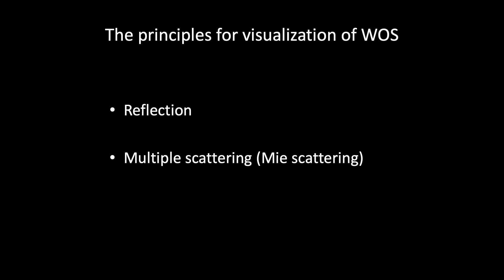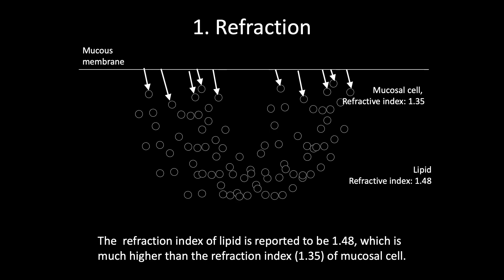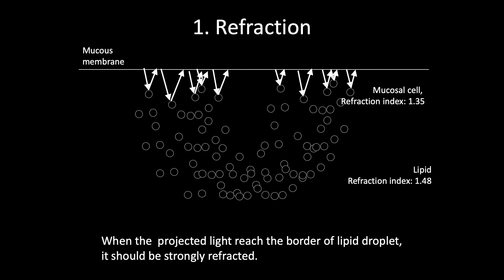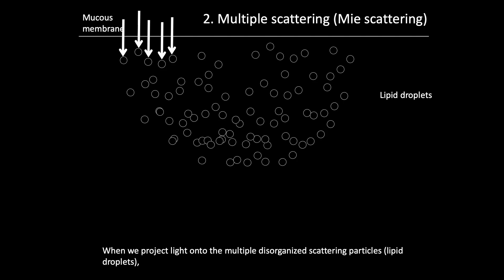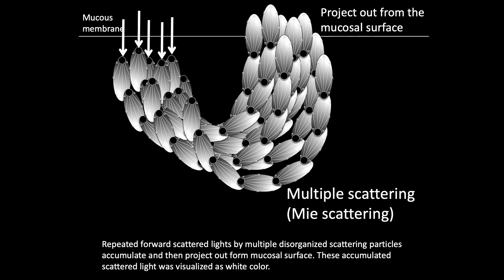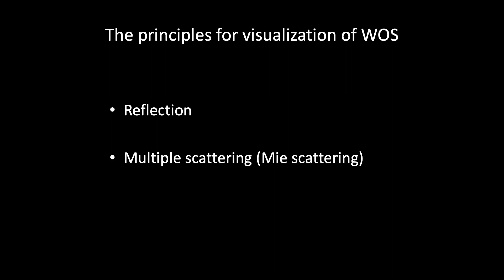Optically, the principles for visualization of White Opaque Substance are due to: one, reflection, and two, multiple scattering. The first is reflection. When we project light onto micro-lipid droplets, the refractive index of lipid droplets is reported to be 1.48, which is much higher than the refractive index of mucosal cells. This can cause quite strong reflection. In addition, multiple scattering: when we project light onto multiple disorganized scattering particles — that is, lipid droplets — it can cause multiple scattering. The principle for visualization of White Opaque Substance is due to reflection and multiple scattering.